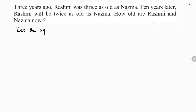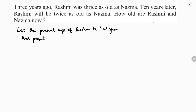Let the present age of Rashmi be X years and the present age of Nizma be Y years old.